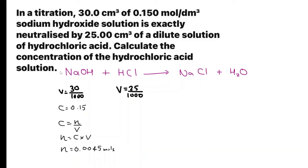Because the molar ratio here is 1 is to 1, whatever the number of moles of sodium hydroxide we have, the exact same number of moles of hydrochloric acid. So the value of N here is 0.0045. I know the volume. Let's find the concentration. C is equal to N over V. So the answer is 0.18 moles per cubic decimeter.